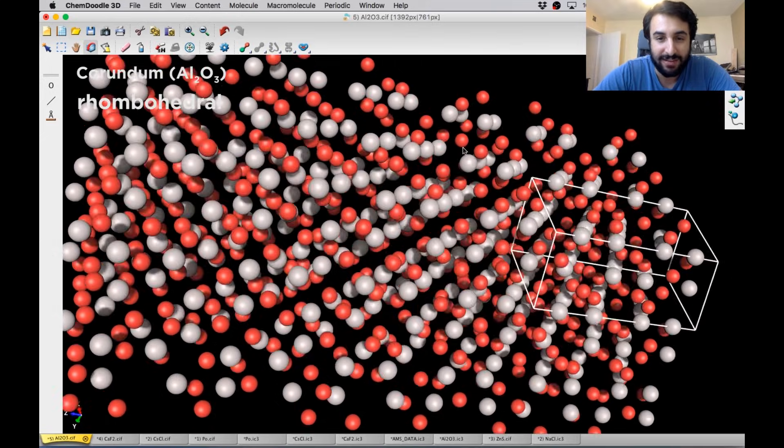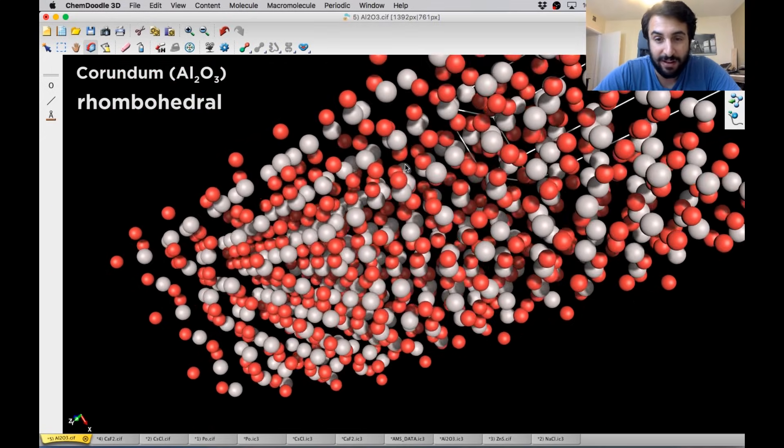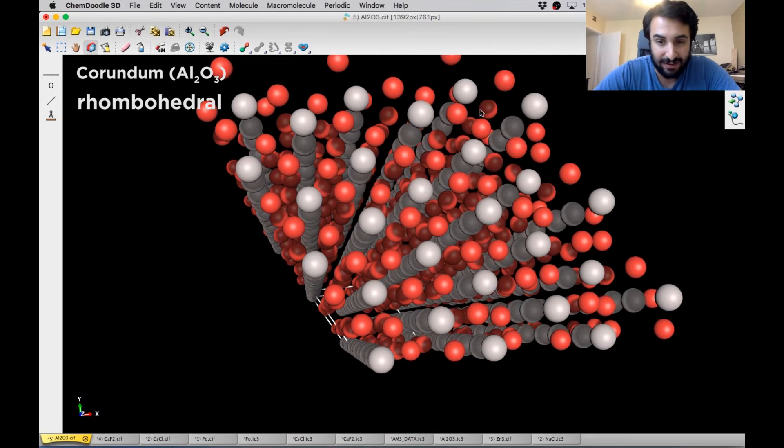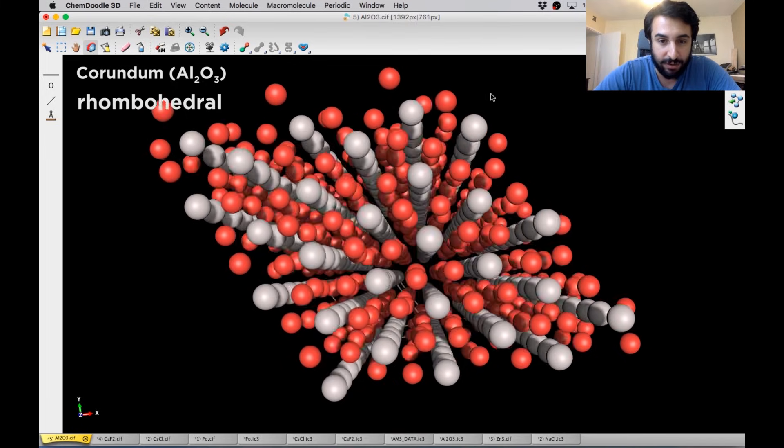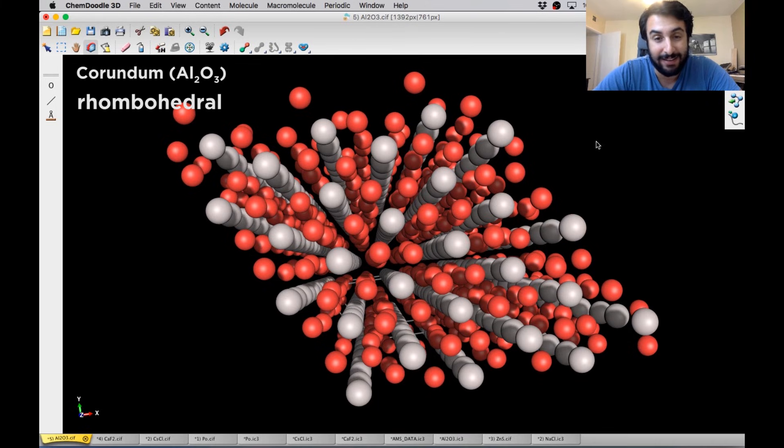So it's a little easier to visualize than just the two-dimensional representations in your textbook. So I do find this useful for getting a better sense of these lattice structures and what the geometry is within them. So if you want to check out ChemDoodle, go ahead and take a look at the link in the description of this clip. It's very affordable. I recommend it. And otherwise, I'll see you next time.